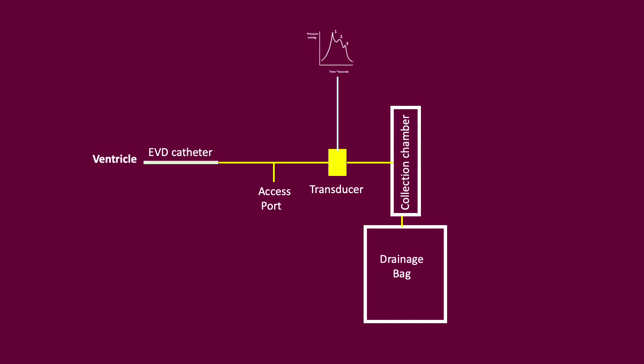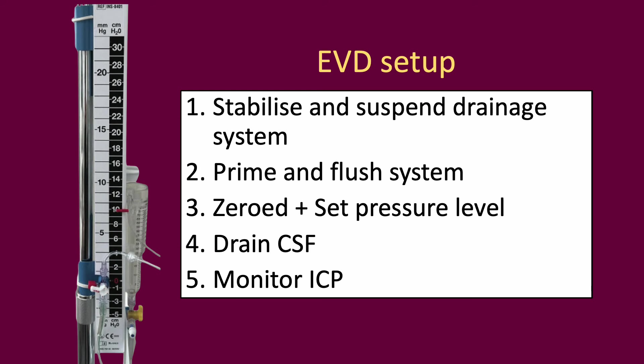EVD output is variable and production increases with age. The usual rate in adults is approximately 20ml per hour or 500ml per day. There is a range of EVD systems available on the market. As seen previously, there is a collection chamber and pressure level, usually denoted in centimetres of water or millimetres of mercury.